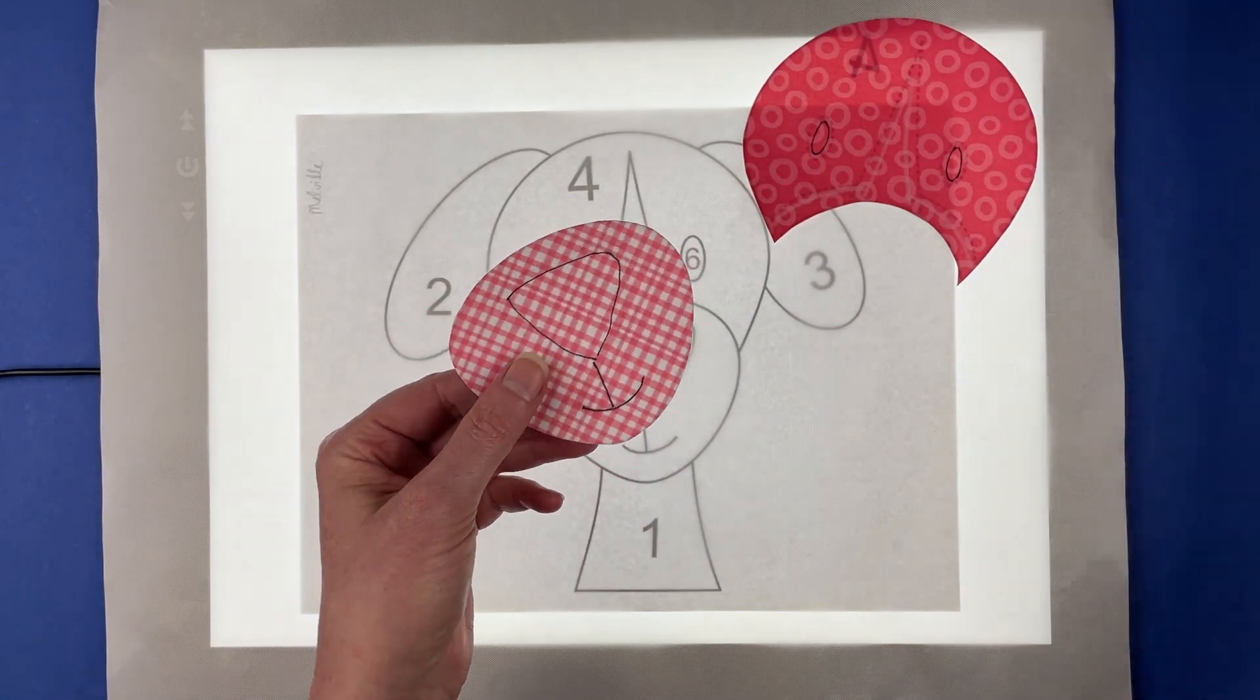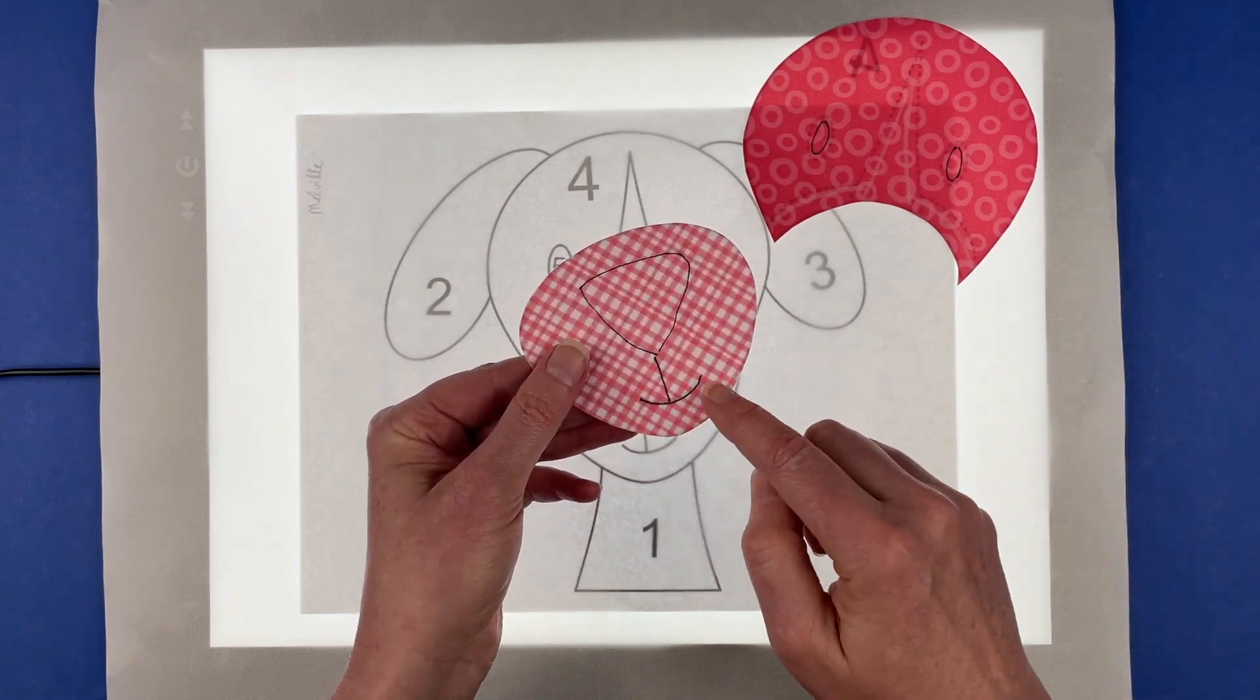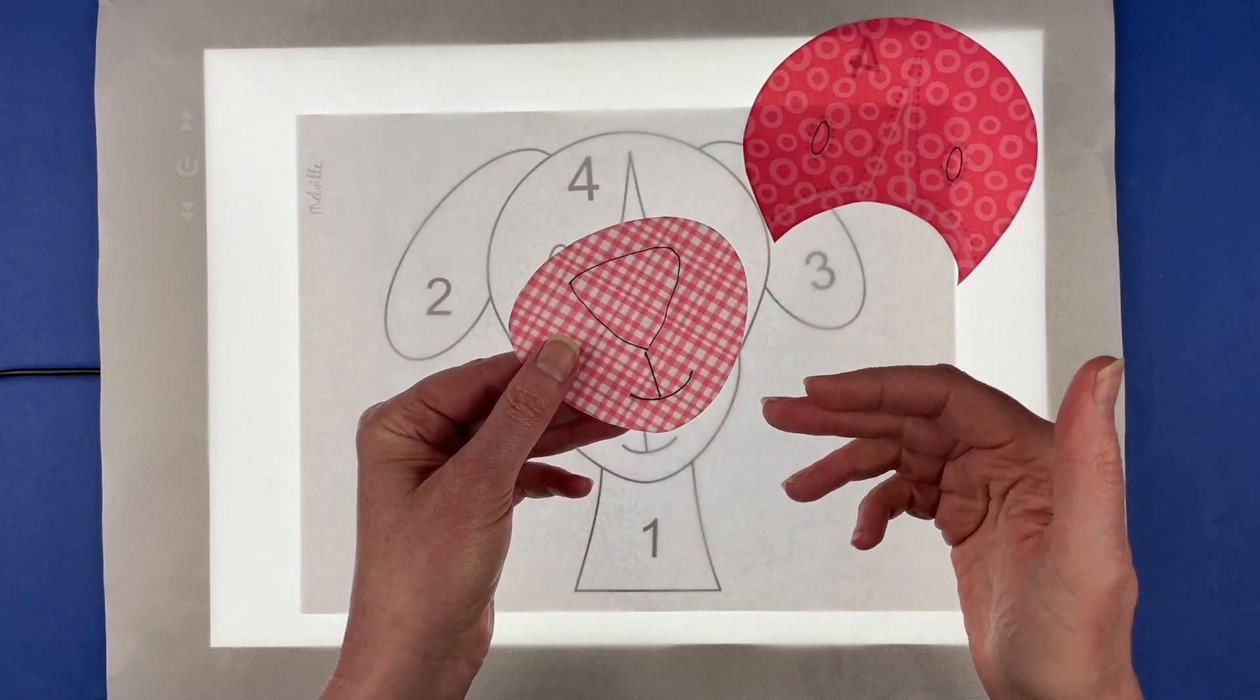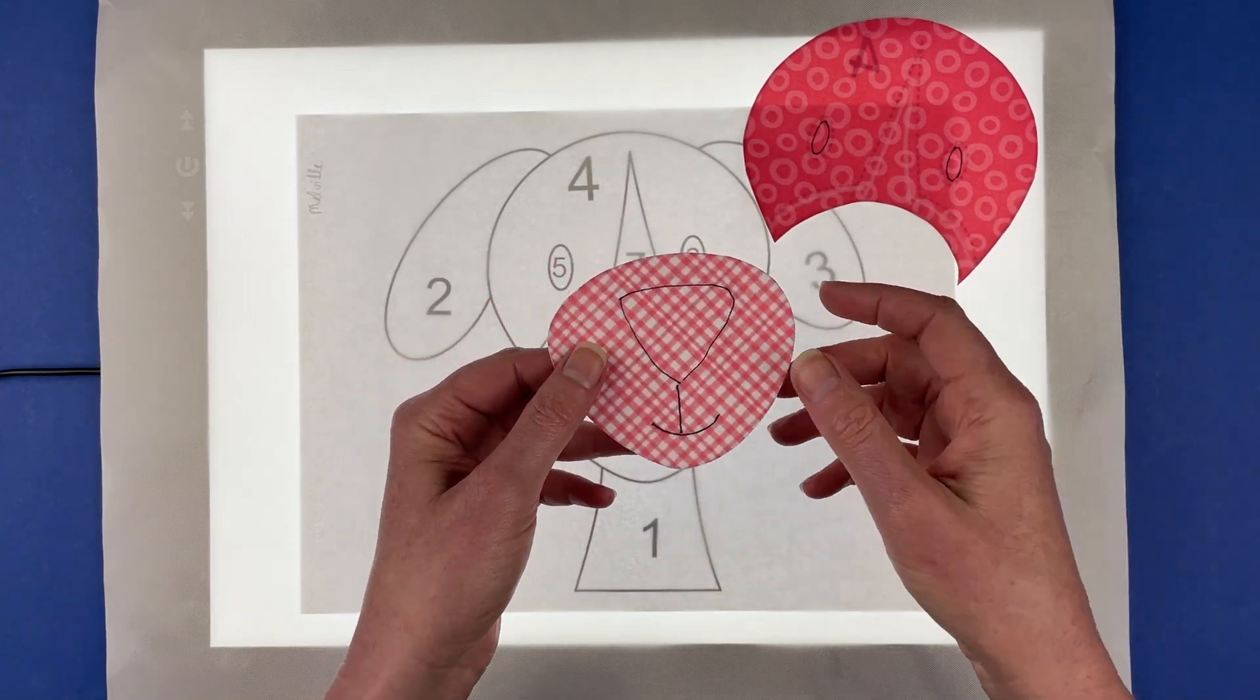It's okay that it's permanent and that it's black because you're going to stitch over this with black thread. So if a little bit of the marker line shows through between your stitches, that's totally fine. It's just going to be black on black and nobody is ever going to see it.